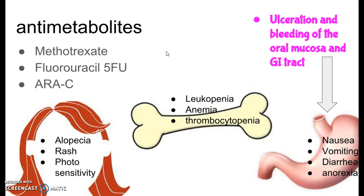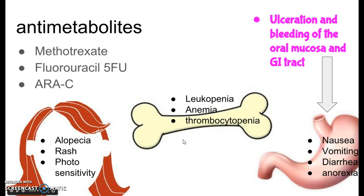The three most commonly heard anti-metabolites are methotrexate, fluorouracil — more commonly called 5-FU — and cytarabine. Cytarabine is not in your book but does appear on the Evolve NCLEX prep. Side effects include alopecia, hair loss, rash, and photosensitivity for skin and hair. The three biggies with bone marrow are leukopenia, anemia, and thrombocytopenia. And of course vomiting, diarrhea, and anorexia — which means loss of appetite. A particularly notable side effect with anti-metabolites is ulceration and bleeding of the oral mucosa and GI tract, which seems to be worse with anti-metabolites than with some other chemotherapeutic agents.